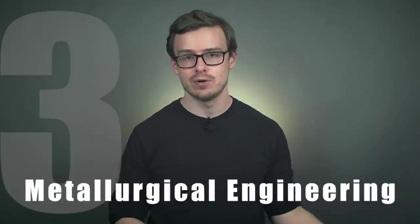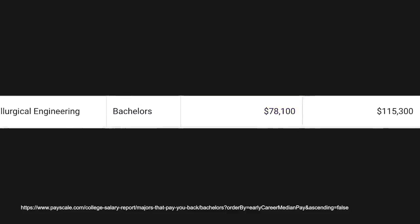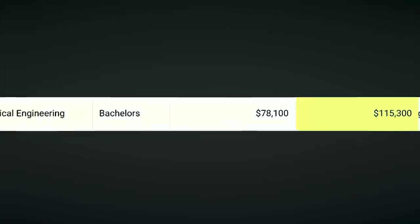Number three on the list is metallurgical engineering. Another engineering related degree. You see these on the list all the time. This one is going to transform minerals and metals into high performance alloys, and these new materials are going to be used to create space shuttles, cars, surgical implants, all kinds of different things like that. With this degree, you're going to start off making around $78,000 a year, and mid-career pay is going to be $115,000. So you can see why this one would be so valuable.